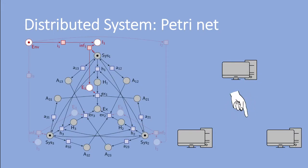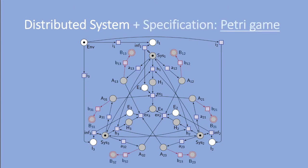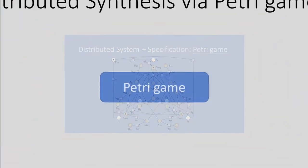Additionally, we model an environment that non-deterministically decides which computer should host the server. We add bad places that the system must not reach, in this example for the case where any computer connects incorrectly. This models the specification. We just built a Petri game.